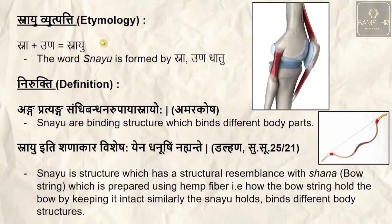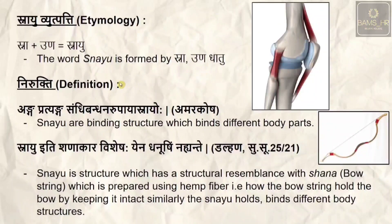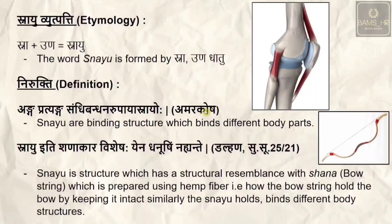When we look at the etymology, the yudhpatti, the word snayu is formed from 'sna' and 'un' dhatuhu. The nirukti of snayu states: anga pratyanga sandhi bandhana rupayaha snayu. The Amara Kosha signifies that snayu are the binding structures.